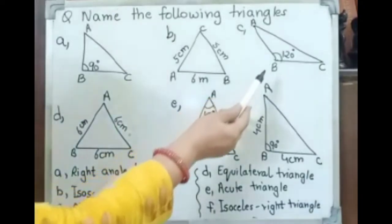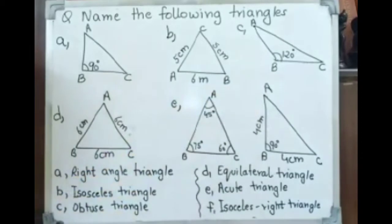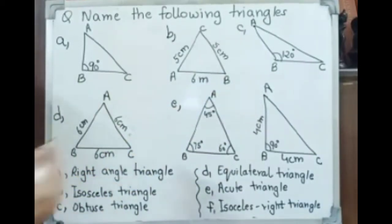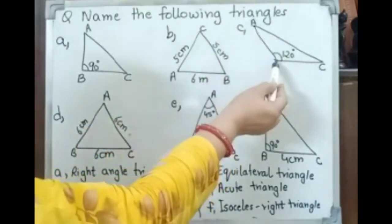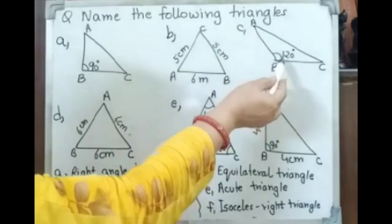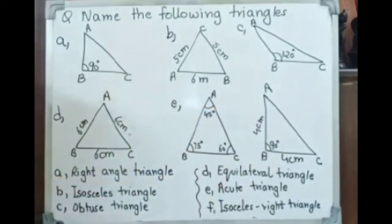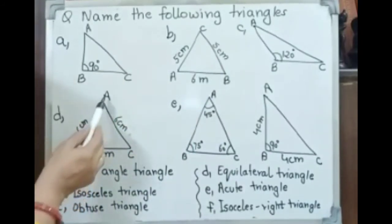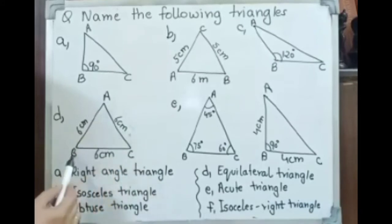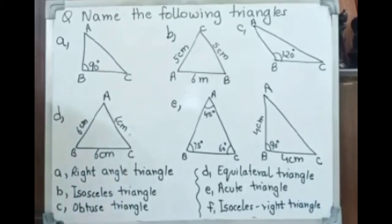The third one is an obtuse triangle. Angle B is 120 degrees, which means more than 90 degrees and less than 180 degrees, with sides AB, BC, and CA. Since angle B is 120 degrees, that is an obtuse triangle. Triangle D has sides DA 6 cm, BA 6 cm, AC 6 cm, and BC 6 cm — all three sides are equal, so it is an equilateral triangle.